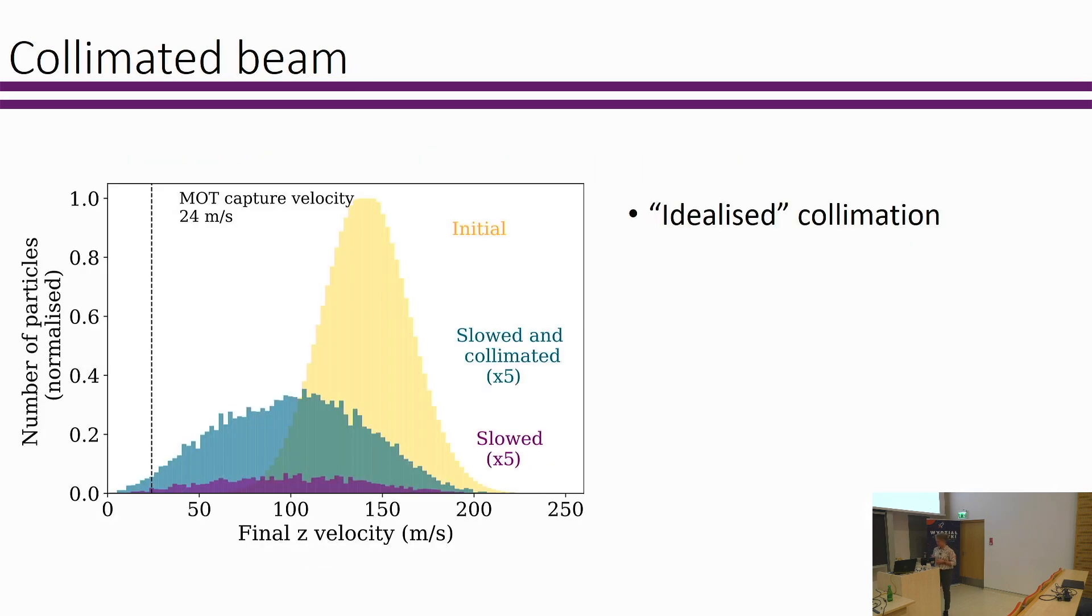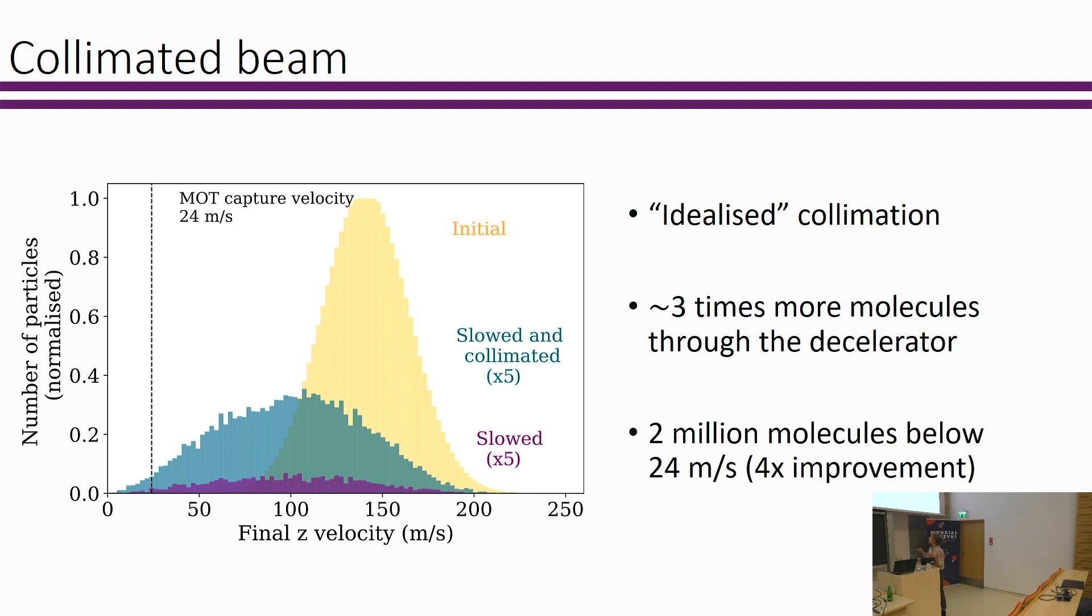If we run some simulations where we do what we refer to as idealized collimation, we aren't simulating the transverse cooling here at all, we're just saying that it's going to work. We collimate our beam - people have shown that transverse cooling works, so hopefully that's not too big of a stretch. We can see that if we take this now collimated beam, we can get three times as many molecules through the decelerator. In fact, we end up with four times as many in this little regime beneath the MOT capture velocity. So this is maybe a way of loading a decent sized molecular MOT.